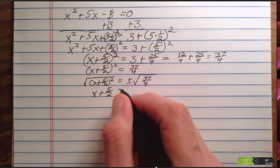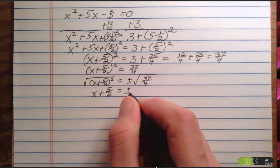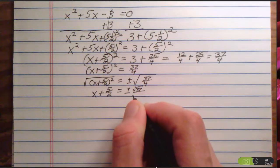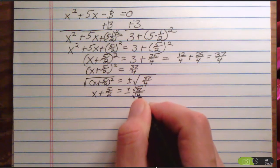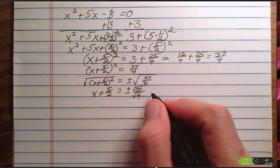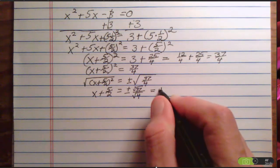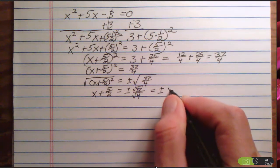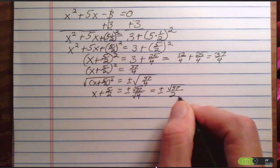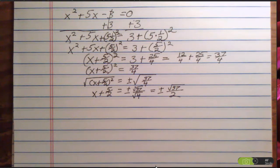Over here, I have ±√37/√4. We know what the square root of 4 is, so this becomes ±√37/2.